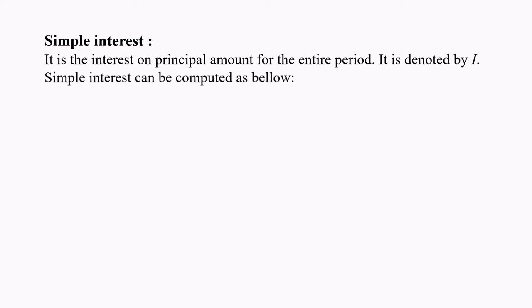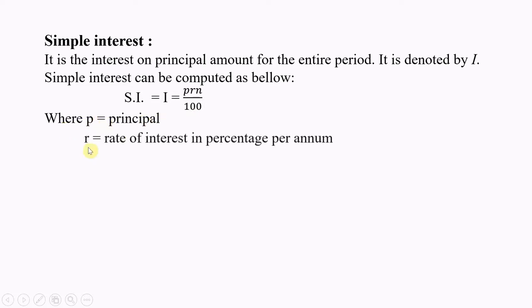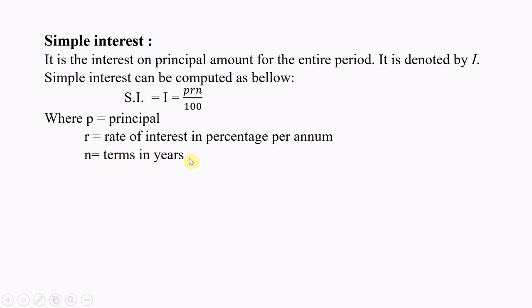Simple Interest can be computed as: I = PRN divided by 100, where P is the principal, R is the rate of interest in percentage per annum, and N is the term in years — not months, not days, but term in years.